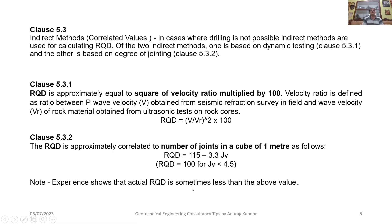Clause 5.3 of this code states that there are two indirect methods by which we can also calculate Rock Quality Designation. As per Clause 5.3.1, RQD is approximately equal to the square of the velocity ratio multiplied by 100. The velocity ratio is defined as the ratio between primary wave velocity V obtained from seismic refraction survey in the field and the wave velocity of rock material Vr obtained from ultrasonic test on rock cores. That is: RQD = (V / Vr)² × 100.